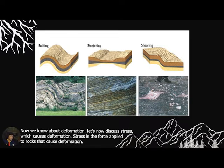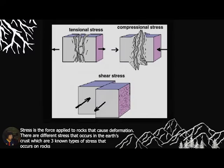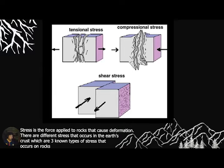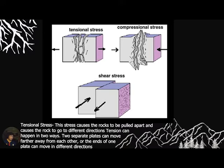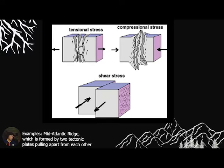Now let's discuss stress, which causes deformation. Stress is a force applied to rocks that causes deformation. There are three types of stress in the Earth's crust. First, compressional stress causes rocks to push against one another, squeezing them together and causing rocks to fold or fracture. Compression is most common at converging plate boundaries. Tensional stress causes rocks to be pulled apart in different directions. Tension can happen when two separate plates move further away from each other, or when the ends of one plate move in different directions — an example is the Mid-Atlantic Ridge, formed by two tectonic plates pulling apart.